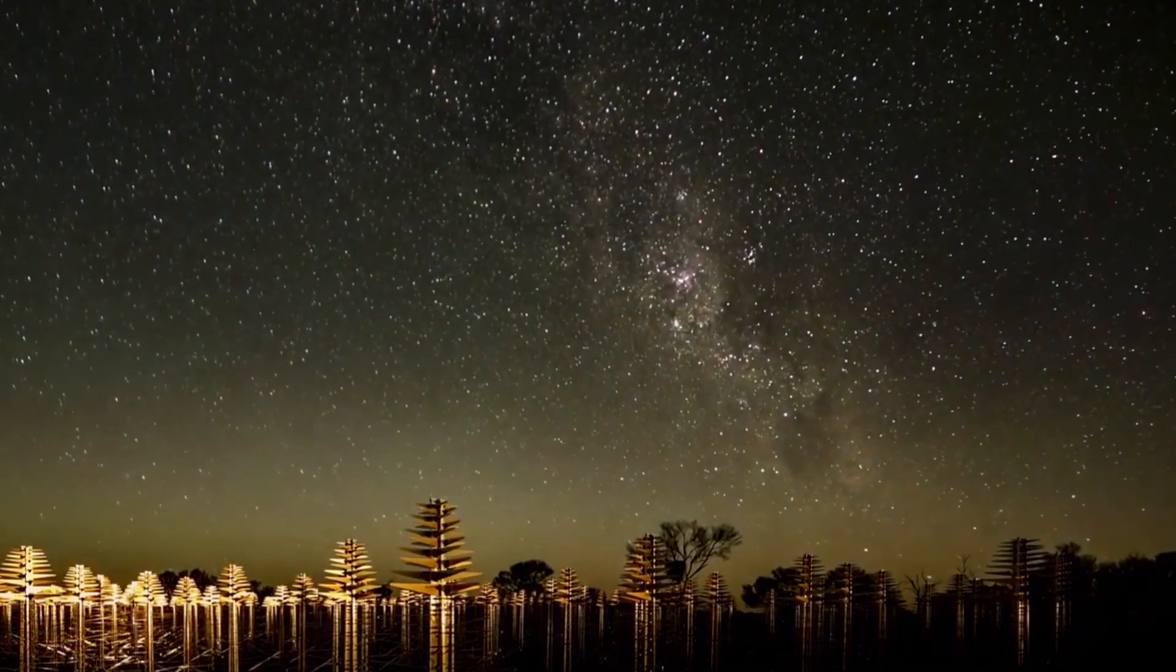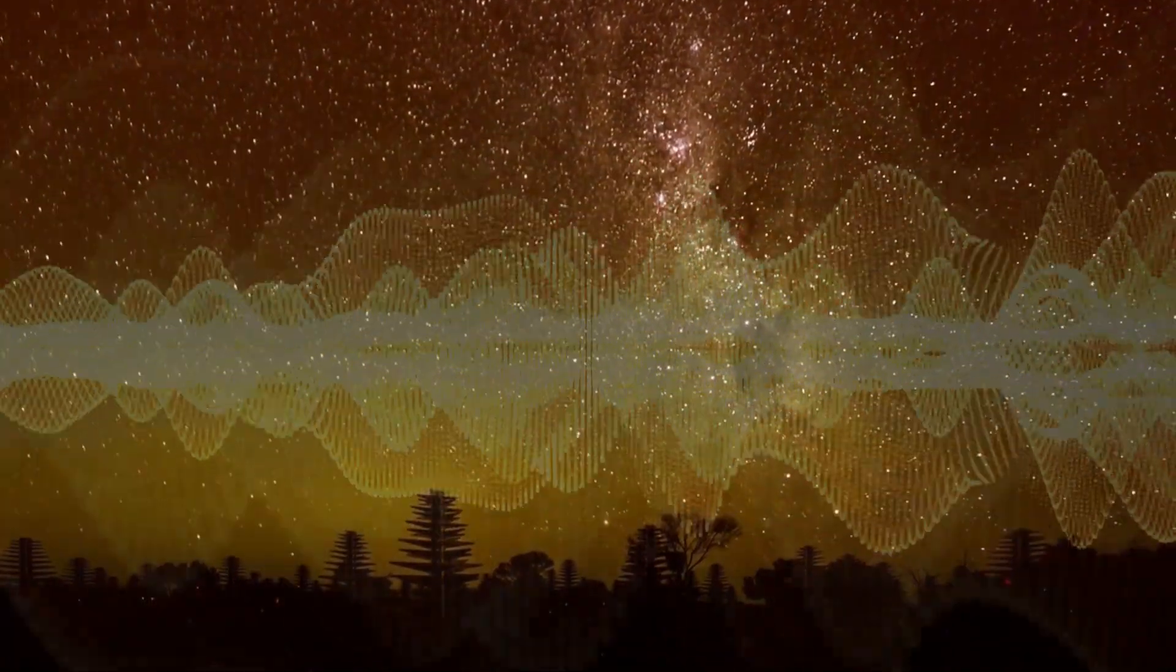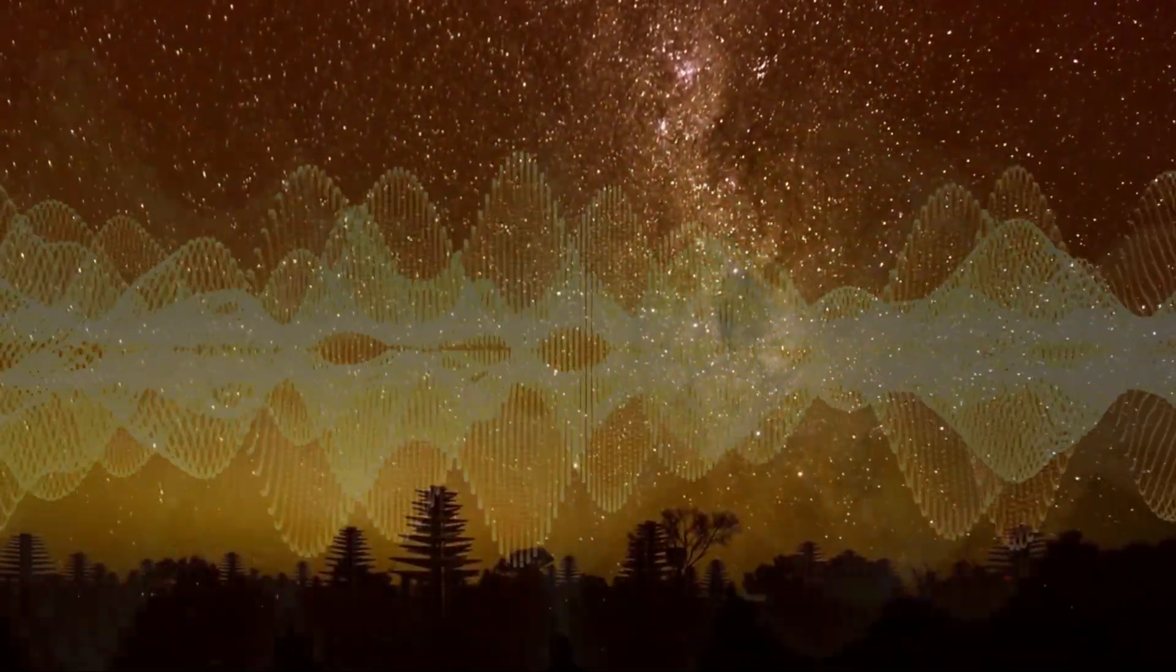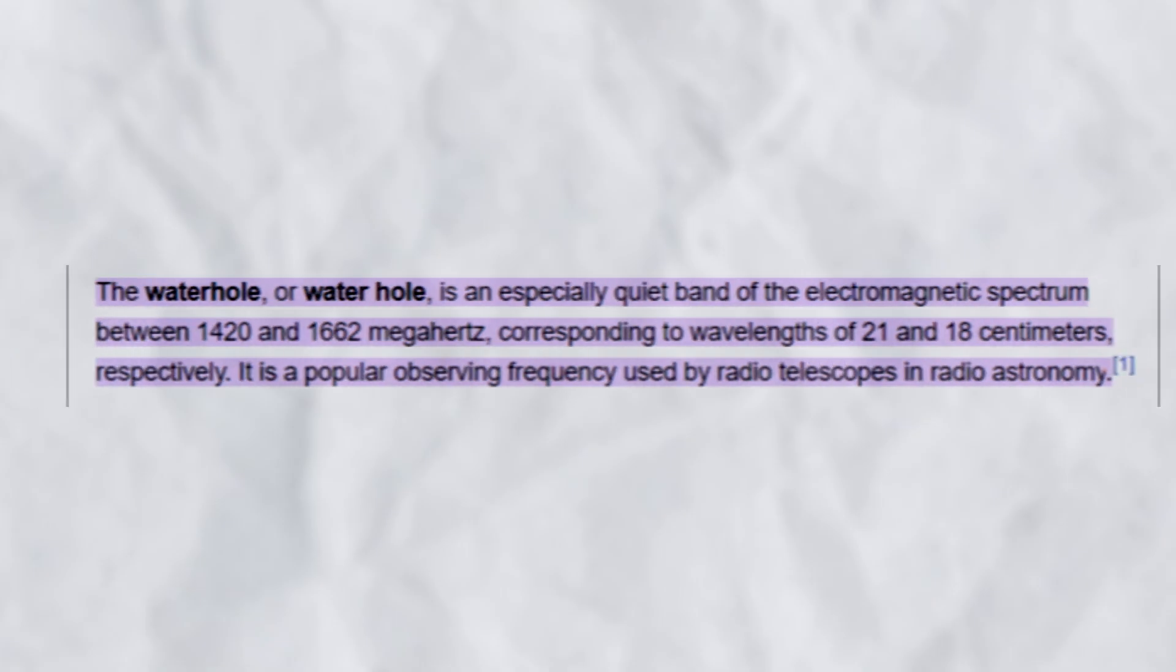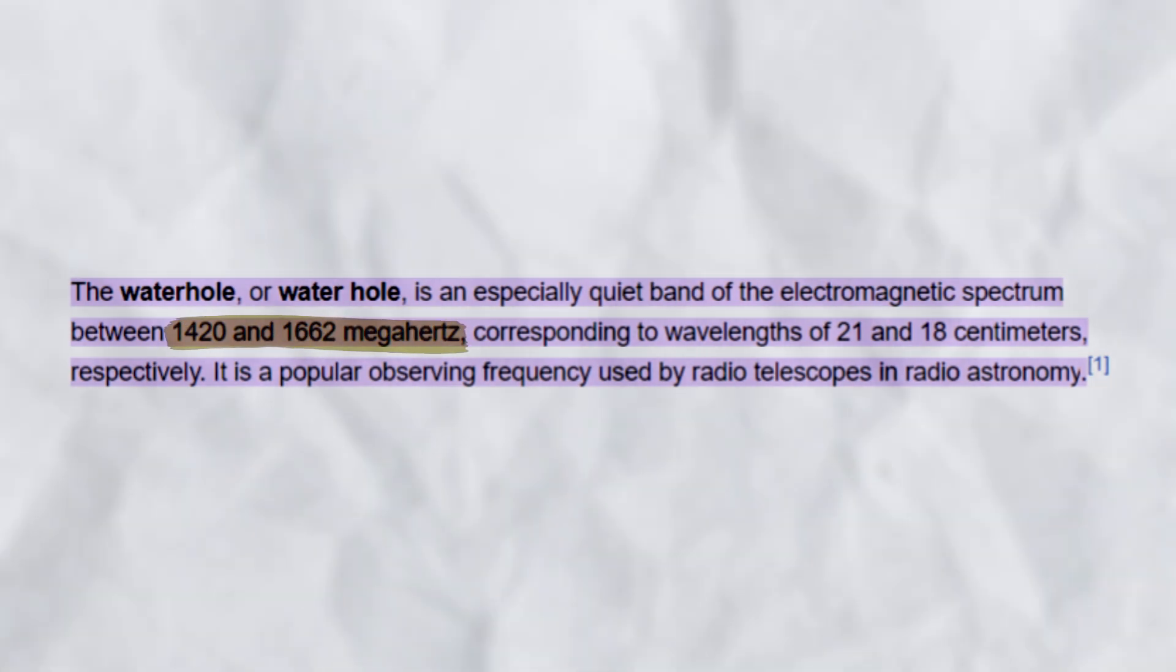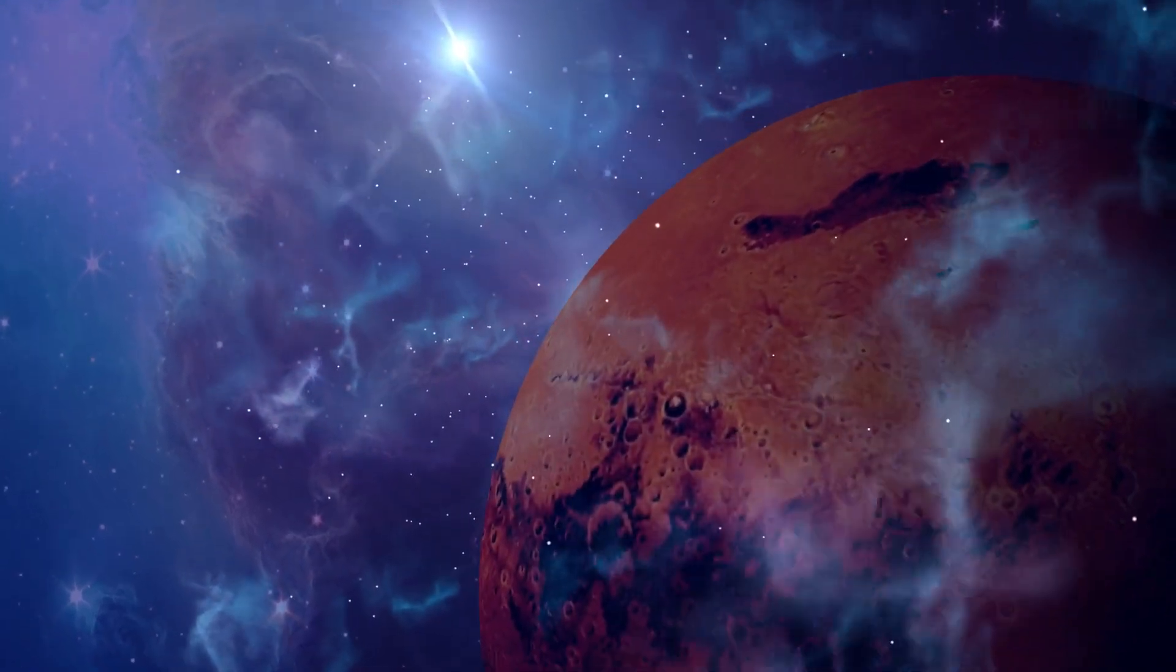One is the frequency range that we are monitoring. To successfully detect a signal from an extraterrestrial civilization, we need to be tuned into the correct frequency range. There are specific frequencies, referred to as waterhole frequencies, ranging from 1420 to 1662 megahertz, that are considered optimal for such communication.